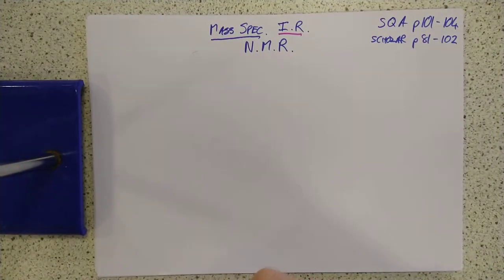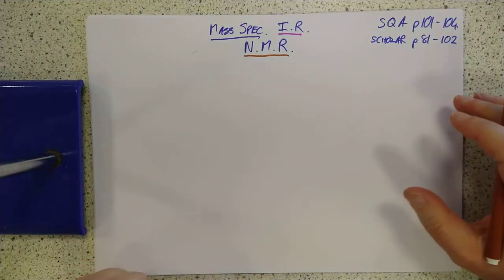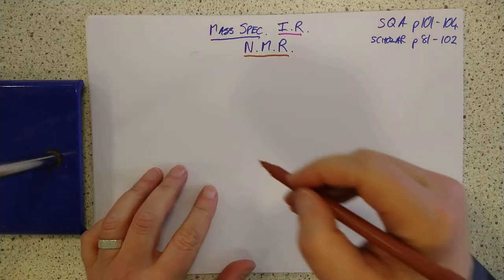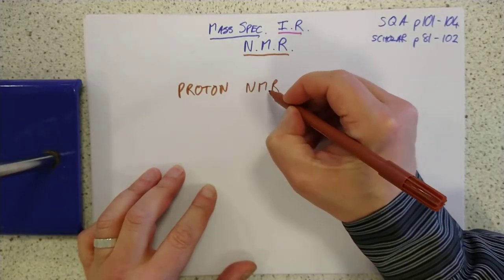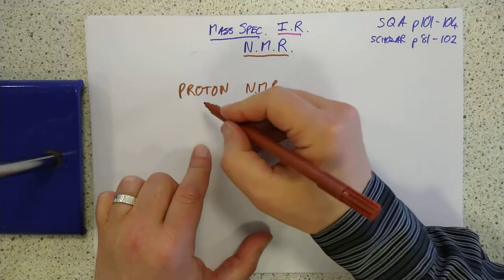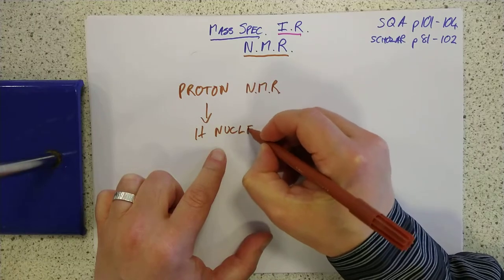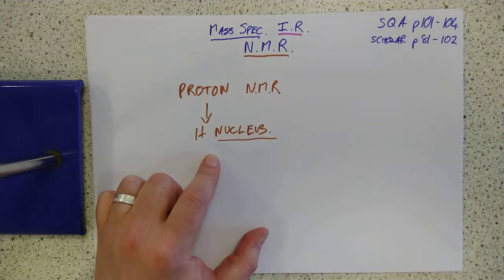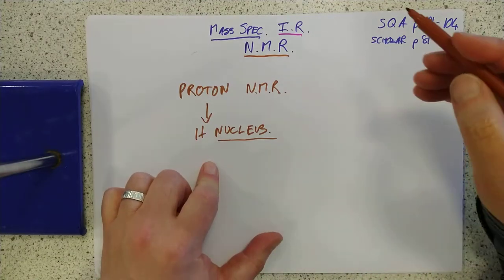We're going to have a look at nuclear magnetic resonance today — probably, in the real world of chemistry, the most useful tool. We're going to look at a certain type of it; you can get a whole bunch of different types, but we're interested in what is called proton NMR, which is actually a wee bit deceptive as far as names go. It's actually to do with the nucleus — in this particular case, we're looking at the hydrogen nucleus, which of course is a proton.